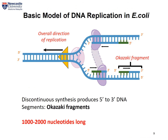DNA synthesis on the lagging strand will happen in short pieces known as Okazaki fragments, which have the size of about 1000 to 2000 nucleotides long. To join these fragments together, we will need the help of DNA ligase, which will form phosphodiester bonds and join these fragments together.